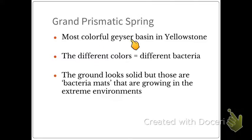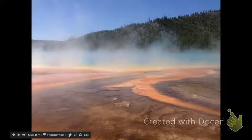At Grand Prismatic Spring, the most colorful geyser in Yellowstone Basin, the different colors again correspond to different bacteria. What looks like solid ground off the walking paths are actually bacteria mats growing in extreme environments. Sadly, in the summer of 2016 someone walked off the boardwalk at Norris Geyser Basin — the bacteria mat was not solid enough to hold them, and they fell through the geyser because acid and water had worn away the formations.